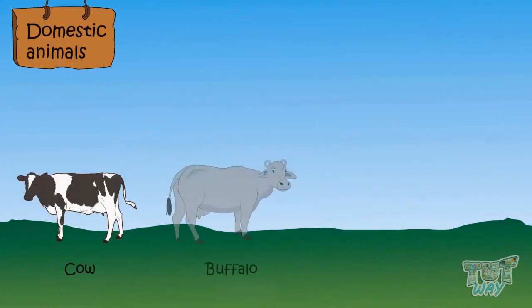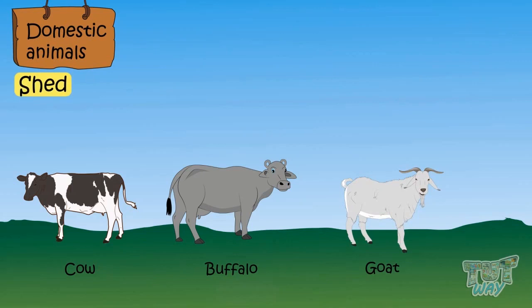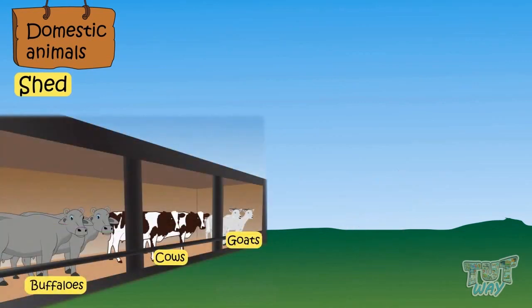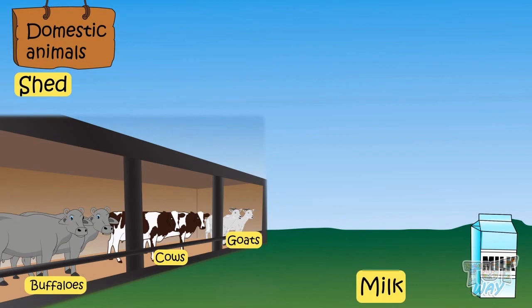Cows, buffaloes, and goats are domestic animals and are kept in a shed. This is a shed for cows and buffaloes. These animals give us milk and they are also called milk animals.